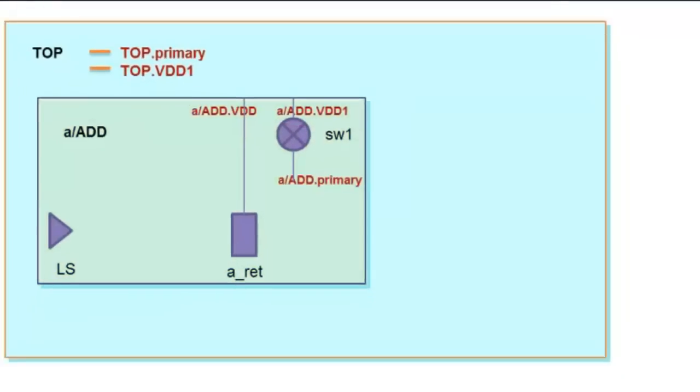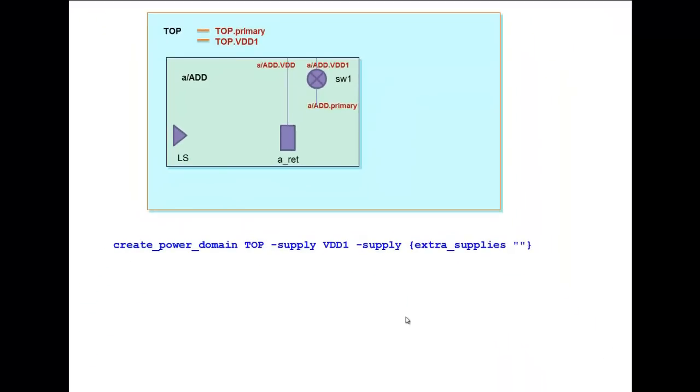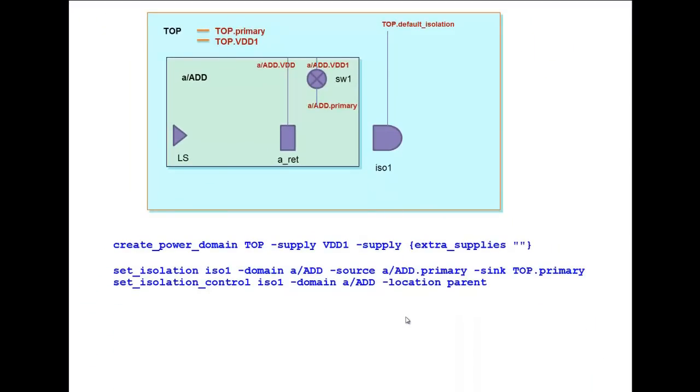We now create the Top.Level PowerDomain and then define the Isolation Strategy with domain name as a slash add instead of just add.